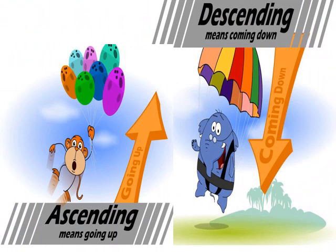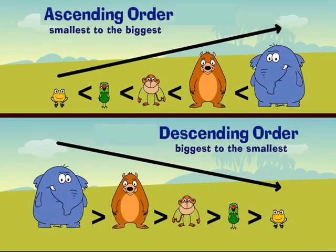Looking at the two pictures: ascending means going up and descending means coming down. We start from small and go up to big — that's ascending. We start from big and move down towards the smallest — that's descending. Ascending order goes from the smallest to biggest; descending order goes from the biggest to smallest.